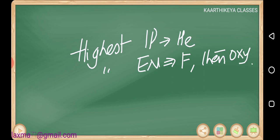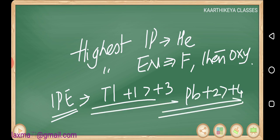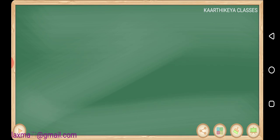A summary of important points: diagonal relationship — which elements show it. Inert pair effect is shown by thallium — Tl⁺¹ is more stable than Tl⁺³. Lead: Pb⁺² is more stable than Pb⁺⁴. These points are important. All other periodic properties — ionization potential, electronegativity, electron affinity, atomic radius — have already been discussed.